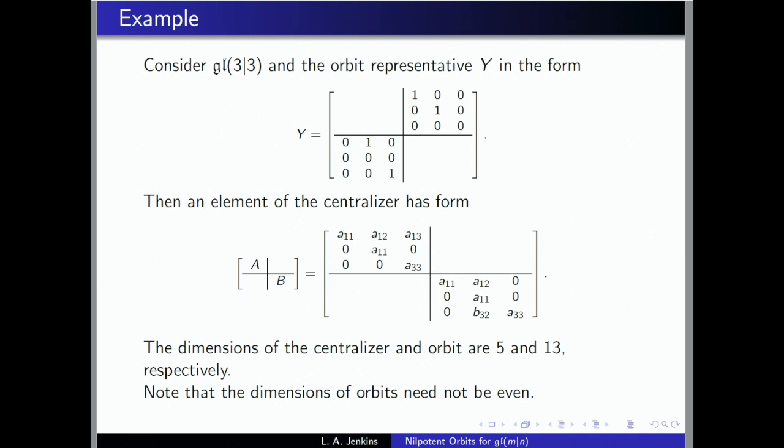You can count the dimension by staring at the centralizer: there are five free parameters, so the dimension of the centralizer is five, and the orbit therefore has dimension 13. One interesting thing is that just from this simple example, you see that the dimensions of the orbits aren't necessarily even—which is different from the ordinary Lie algebra case, where the dimensions of nilpotent orbits are always even. Here they can be even or odd.